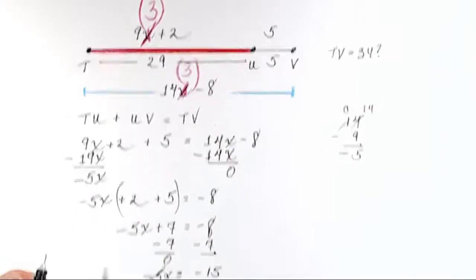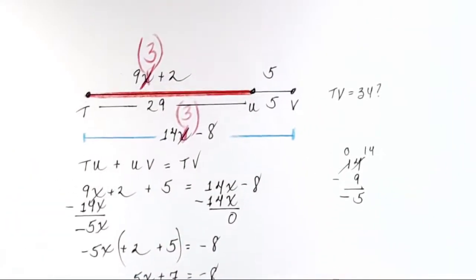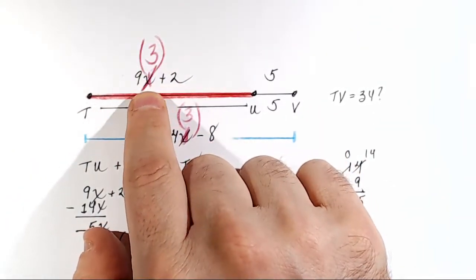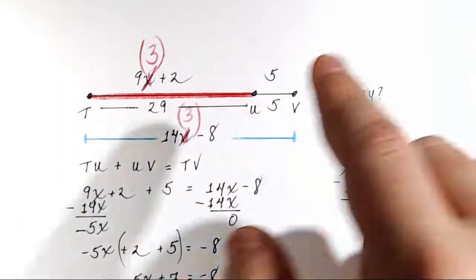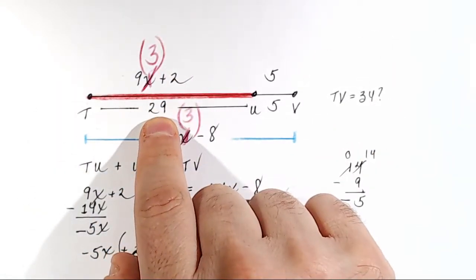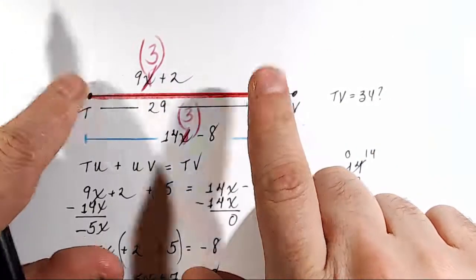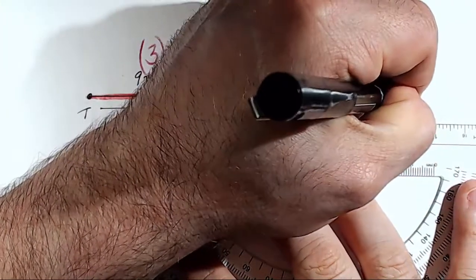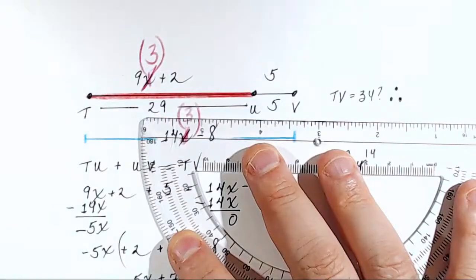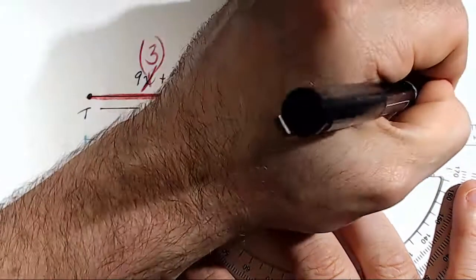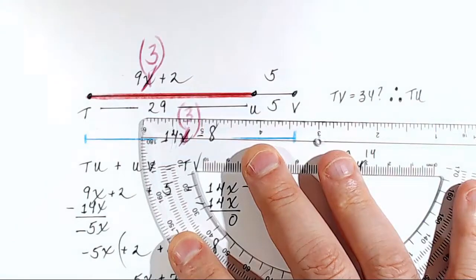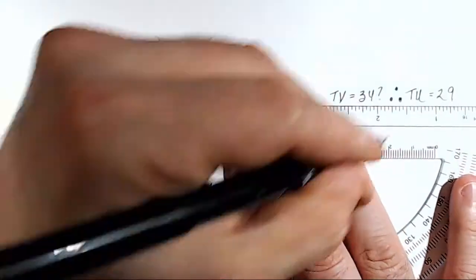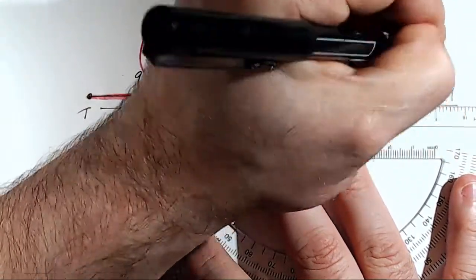That means we found the correct x, 3. We substituted that x with a 3 right there. We multiplied 9 times 3, got 27, added 2, and we got 29. And that means that the distance from T to U is 29. We use this little symbol right here. Looks like something from a Zelda game. It means therefore. Therefore, distance TU is equal to 29. And that's what we were asked to find in the problem.